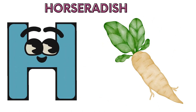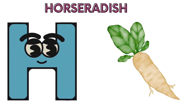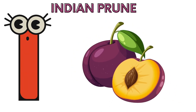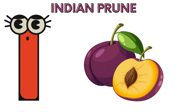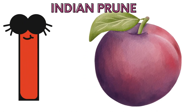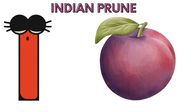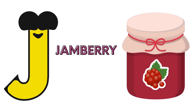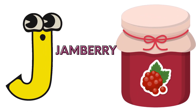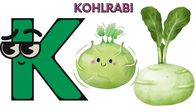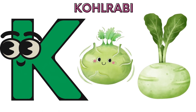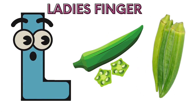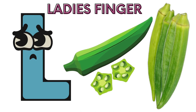H is for horseradish, horseradish. I is for Indian prune, Indian prune. J is for jamberry, jamberry. K is for kohlrabi, kohlrabi. L is for lady's finger, lady's finger.